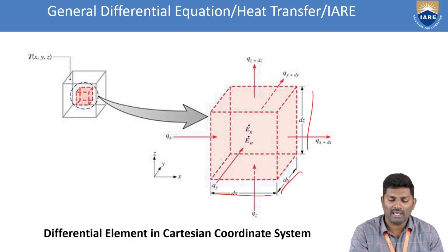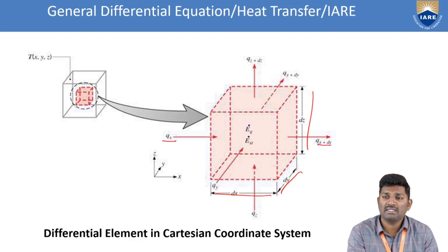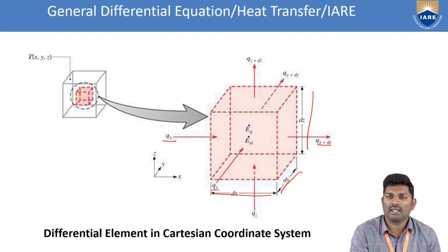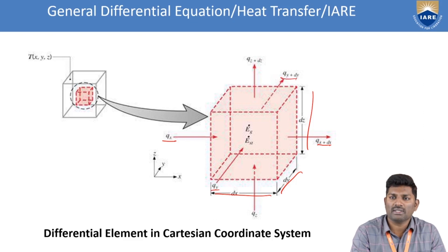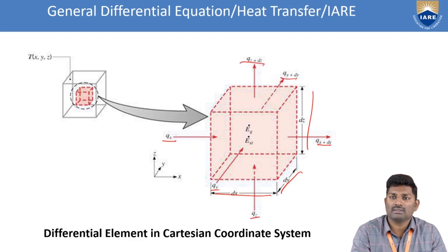The heat flux along x direction is given by qx. If you give heat input along x direction, after some time the change in the heat input will be qx plus dx. Similarly, if you are giving qy along y direction as heat input, the change in the y direction will be qy plus dy. Similarly, along z direction, qz is the heat going inside and the outlet will be qz plus dz. These are the three changes in heat along the x, y, z directions.